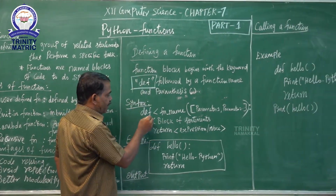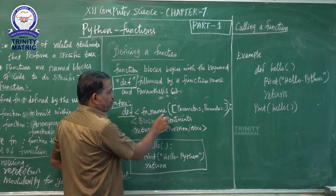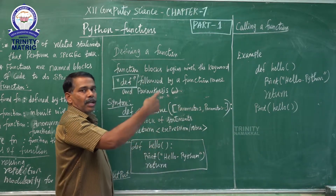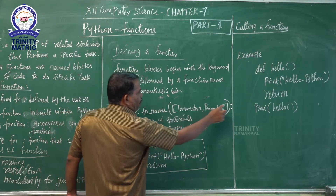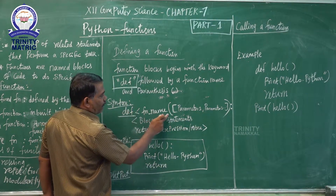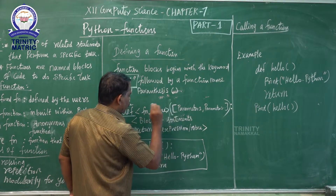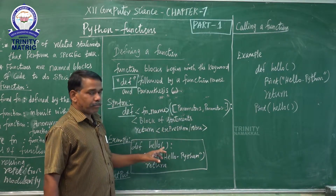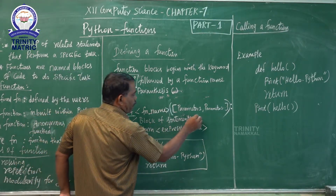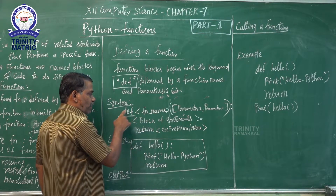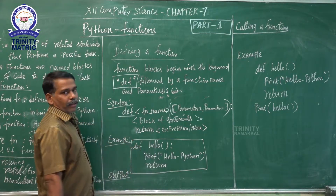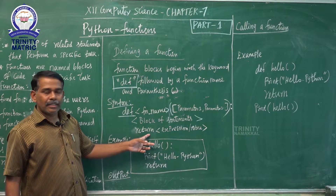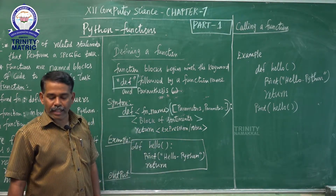The syntax for defining a function is: 'def', which is a keyword, followed by the function name, then parentheses containing a parameter list (parameter 1, parameter 2, parameter 3, and so on), then a colon. The block of statements belongs to the function definition. The return statement may return any value or may not return any value — if the return statement returns nothing, Python displays 'None'.